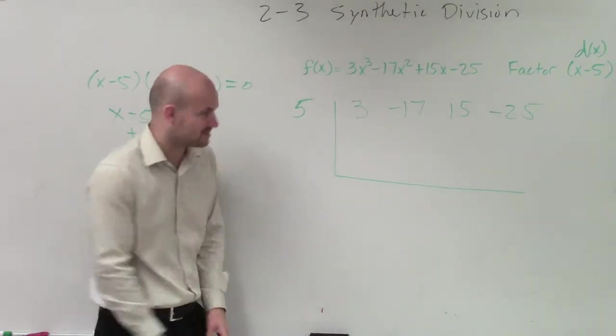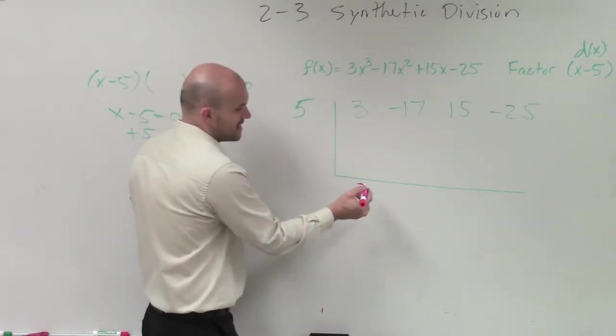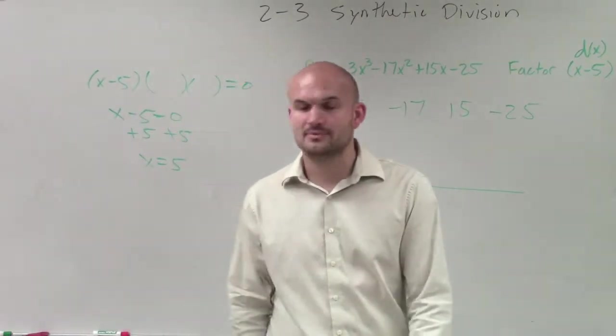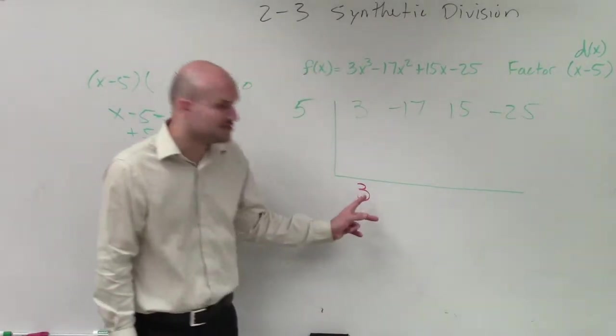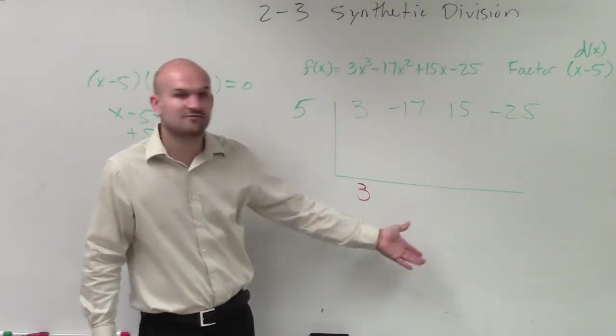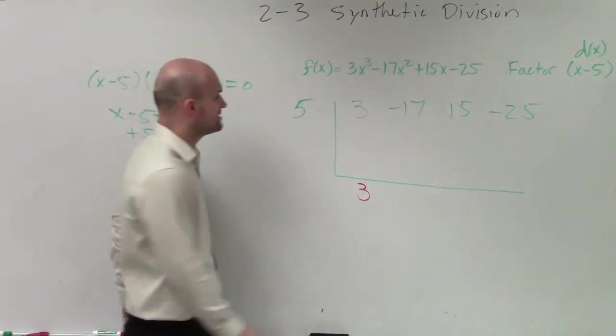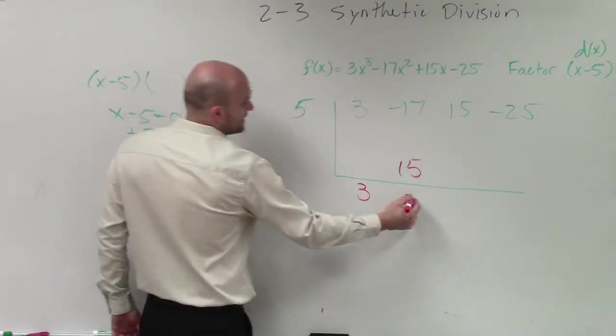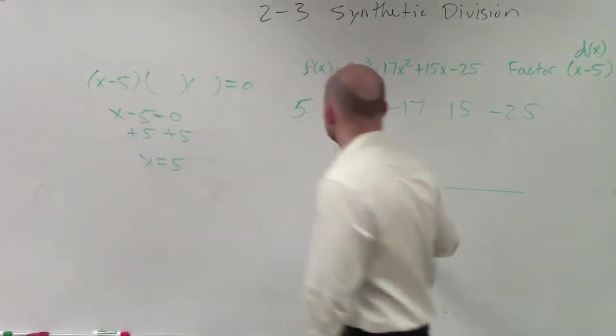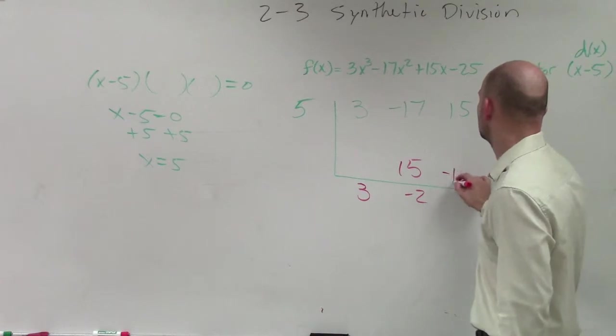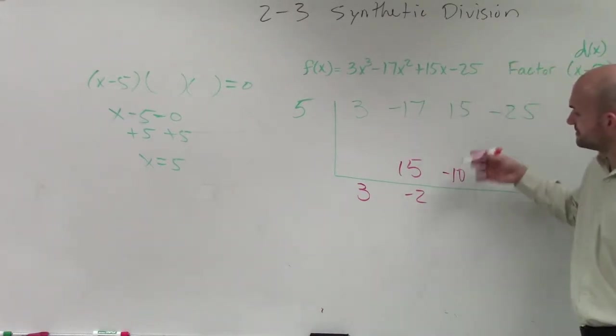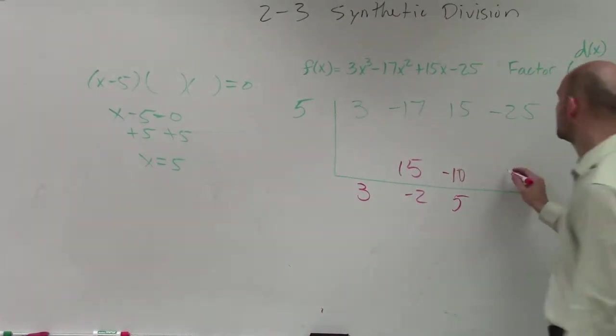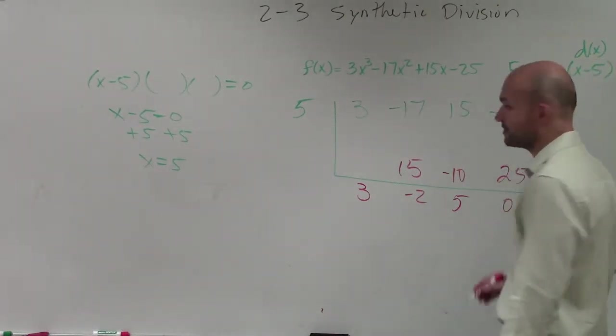So, synthetic division algorithm goes like this. First number, you bring down. That's the freebie we like to call it. Okay? Now, the next thing is you multiply diagonally, add vertically. Three times five is 15. Negative 17 plus 15 is negative 2. Negative 2 times 5 is negative 10. 15 plus negative 10, positive 5. 5 times 5 is 25. That becomes zero.